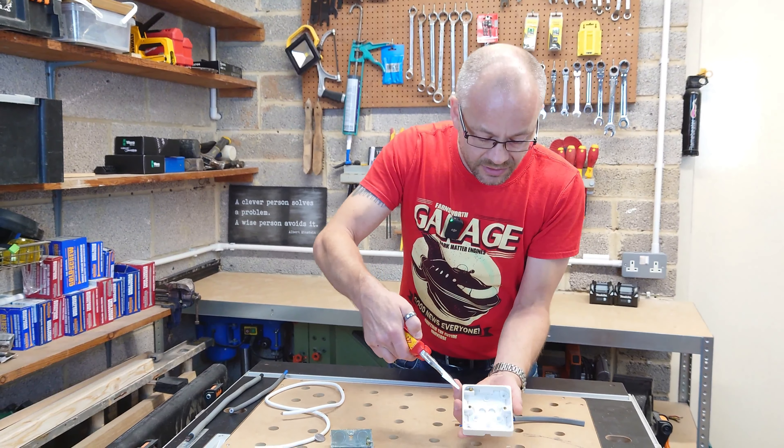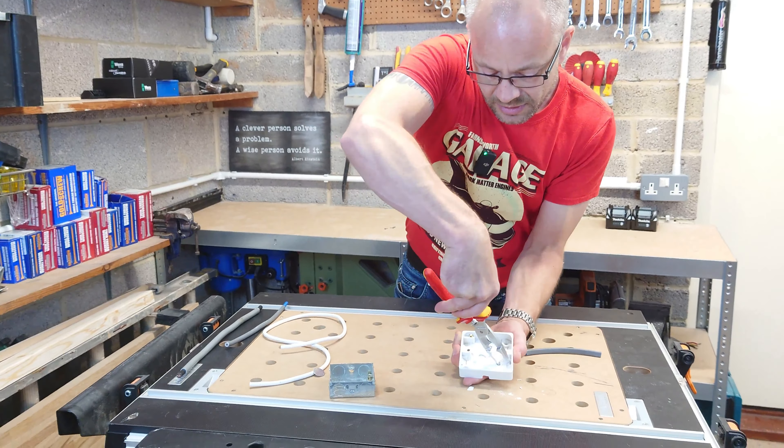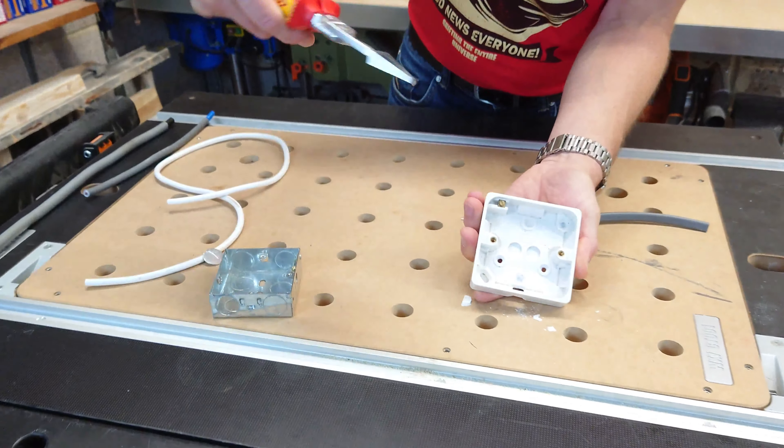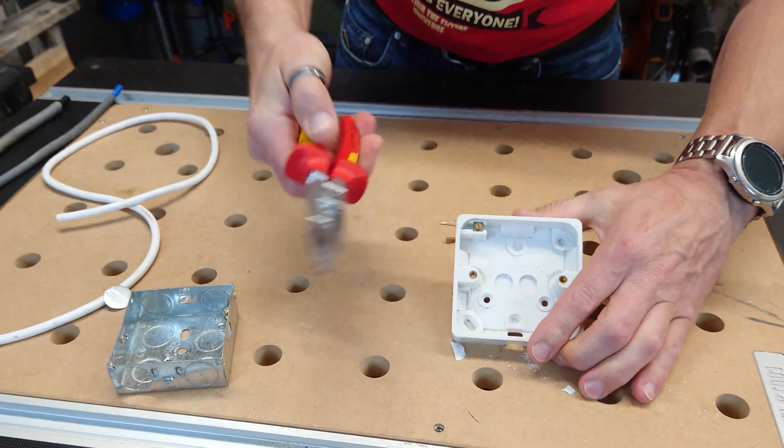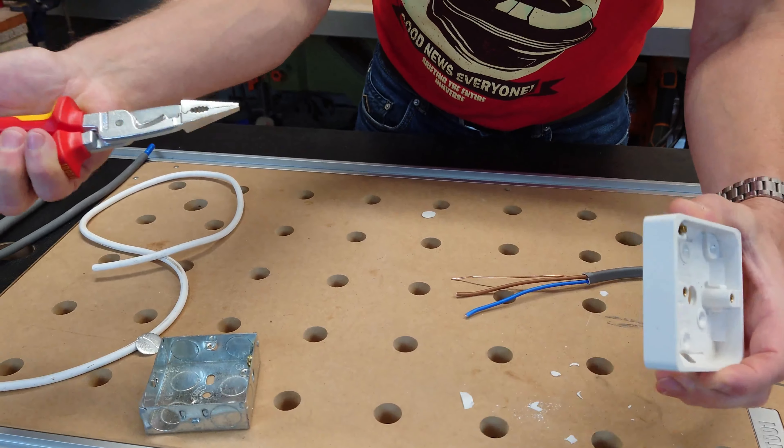And again, because they're flat, you can just open it up if you need to, with the smaller knockouts, and just push the hole straight out. Ready for your screws. Or again, you've got these knockouts here, straight out. Really simple, fantastic tool.